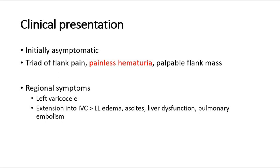There are also regional symptoms the patient might have, such as left varicocele. A left-sided tumor may present with varicocele due to invasion of the left renal vein by the tumor, obstructing the left testicular vein. Extension into the inferior vena cava can cause lower limb edema. Ascites with abdominal distension, liver dysfunction, or pulmonary embolism can also occur.